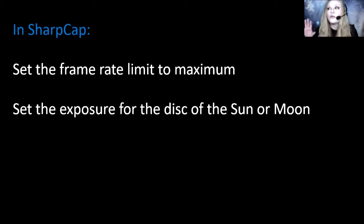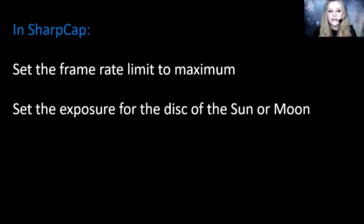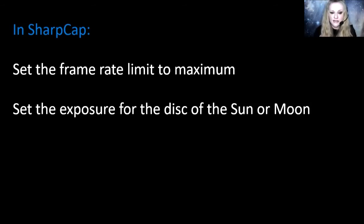Once you're pointing at the Moon, I always set up super early so everything is aligned and the focus is absolutely spot on, because if the focus is off the space station won't be in focus either. Once I'm happy with the focus, I set the exposure appropriate for whatever the Moon phase is — if it's quite a bright Moon you want to make sure you're not overexposing the disk. Same with the Sun — make sure you're not overexposing that. Just make sure the disk of whatever the space station is crossing is focused and exposed correctly.